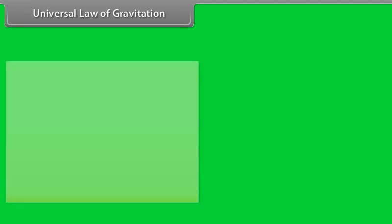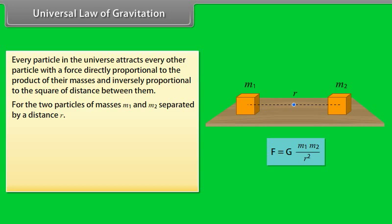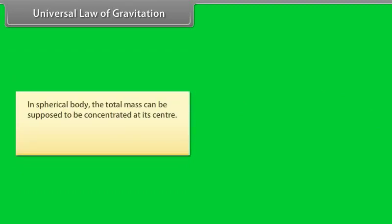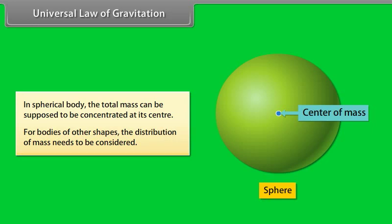Universal law of gravitation. According to Newton's law of gravitation, every particle in the universe attracts every other particle with a force directly proportional to the product of their masses and inversely proportional to the square of distance between them. The direction of this force is along the line joining the two particles. For the two particles of masses m1 and m2 separated by a distance r, F is equal to g m1 m2 upon r square. The constant g is called universal constant of gravitation. In spherical body, the total mass can be supposed to be concentrated at its center. For bodies of the other shapes, the distribution of mass needs to be considered.